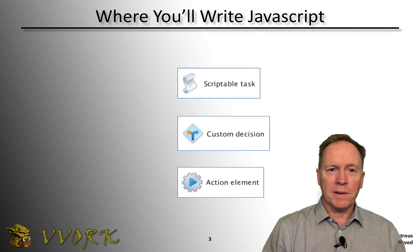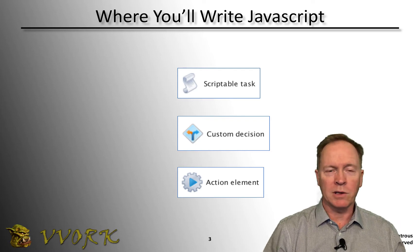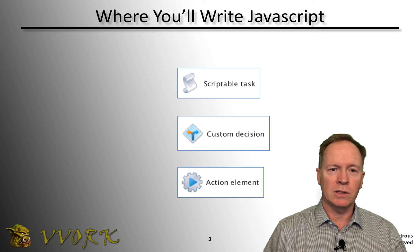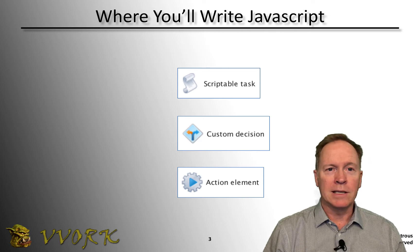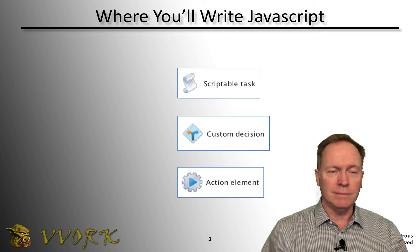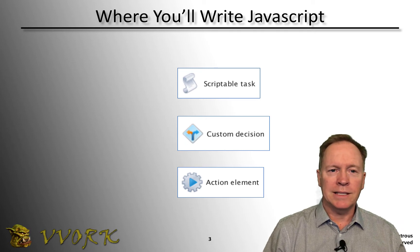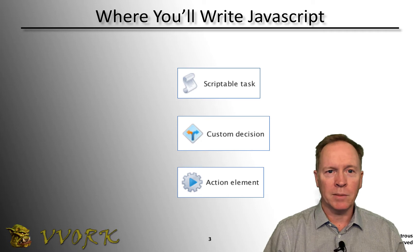One of the places you're going to use JavaScript is in the scriptable tasks schema element introduced earlier in this series. But in addition to the scriptable task, there are a few other places where you will use JavaScript coding. One of those is in the custom decision schema elements — I haven't talked about those yet in this series, but coming up soon. The custom decision element is essentially like an if-then statement in your Orchestrator workflow.